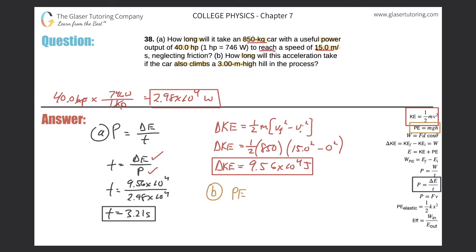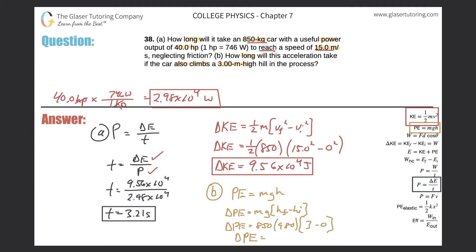Potential energy is equal to mass times gravitational acceleration times the change in height. So the change in potential energy equals m × g × (h_final − h_initial). Plugging in: ΔPE = 850 × 9.80 × (3 − 0) = 850 × 9.8 × 3, which gives us 2.50 × 10⁴ joules.